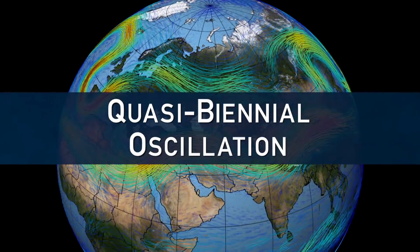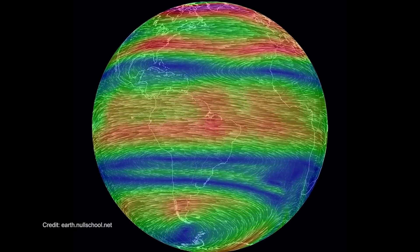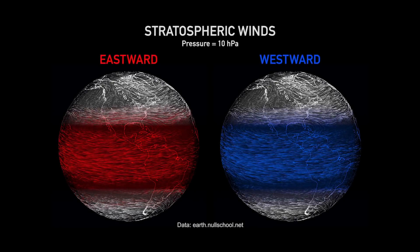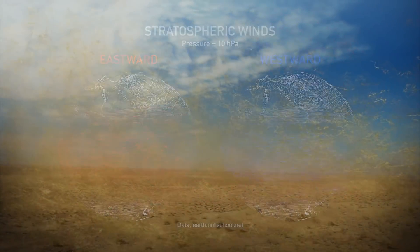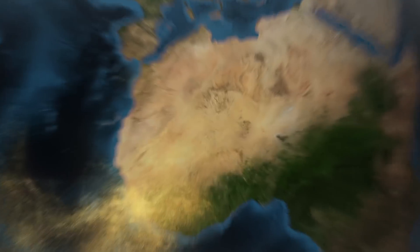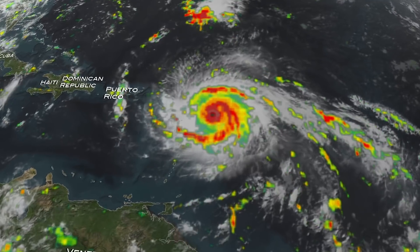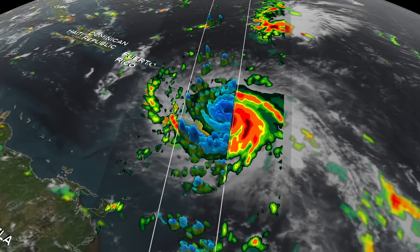The quasi-biennial oscillation, or the QBO, on Earth is an equatorial phenomenon in the stratosphere where the winds are changing direction approximately every two years. Depending on which phase the QBO is in — eastward or westward — the temperature signal corresponds to that, so it's warmer in the eastward phase and cooler in the westward phase. It's been shown that it can actually be a barrier to transport of aerosols across the equator and has been linked to the frequency and the formation of hurricanes in the Atlantic and the Pacific Ocean.